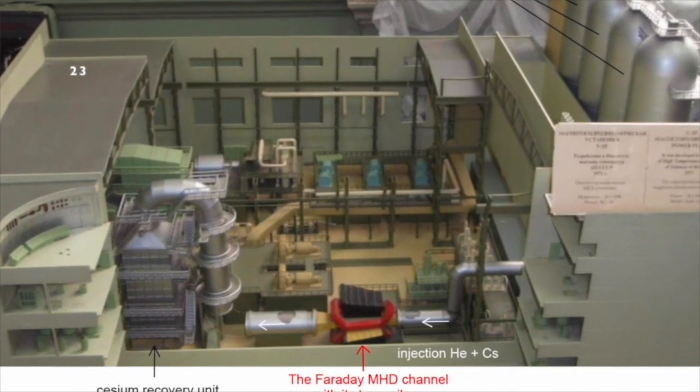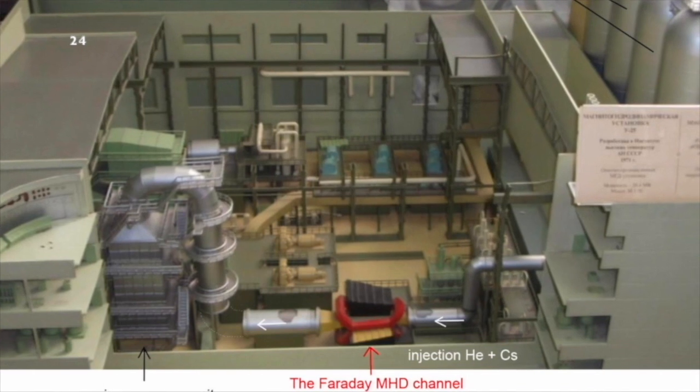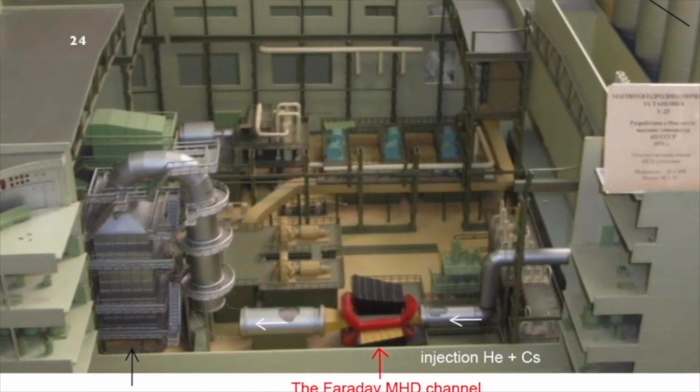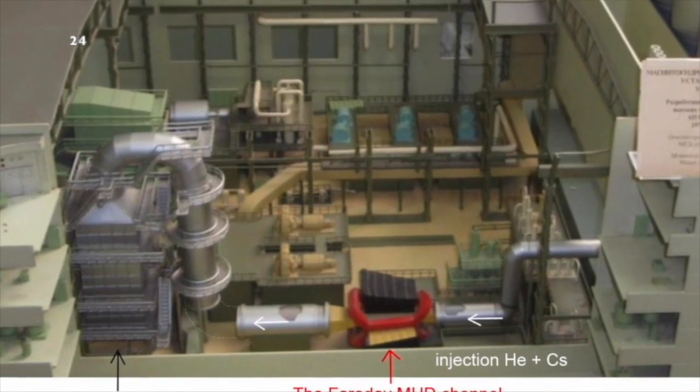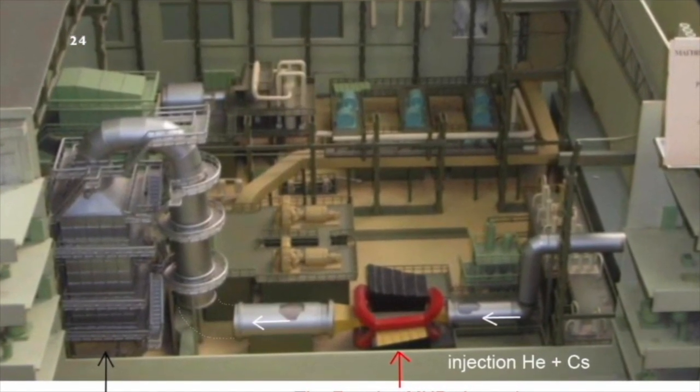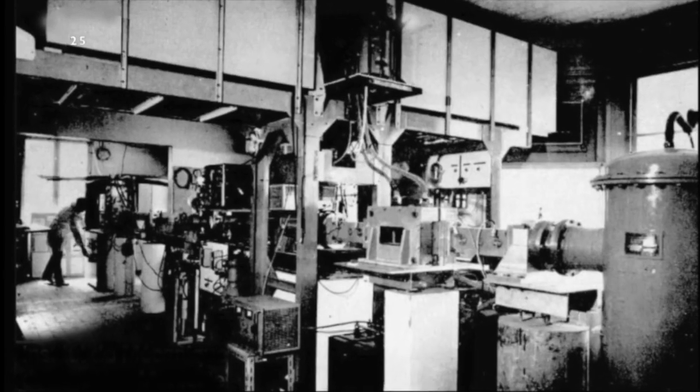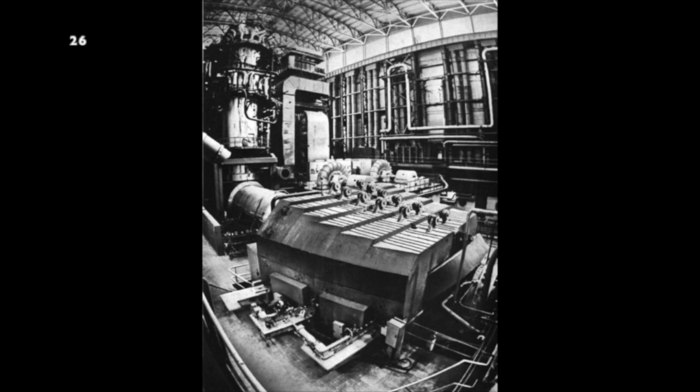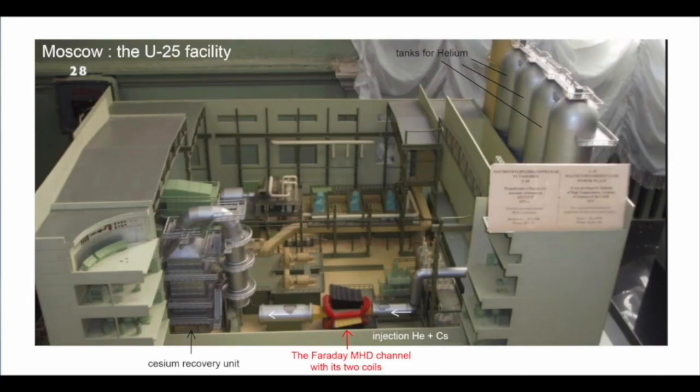This is a model of the huge Russian U-25 installation that operated near Moscow in the 70s. In the French MHD generator, the MHD nozzle was the size of a beer can. By comparison, here is the nozzle of the Russian MHD plant, and its 2,000 ton magnet. This is the inside of the nozzle. To the right and left are the electrodes. In this Russian installation, the gas temperature did not exceed 1,200 degrees.